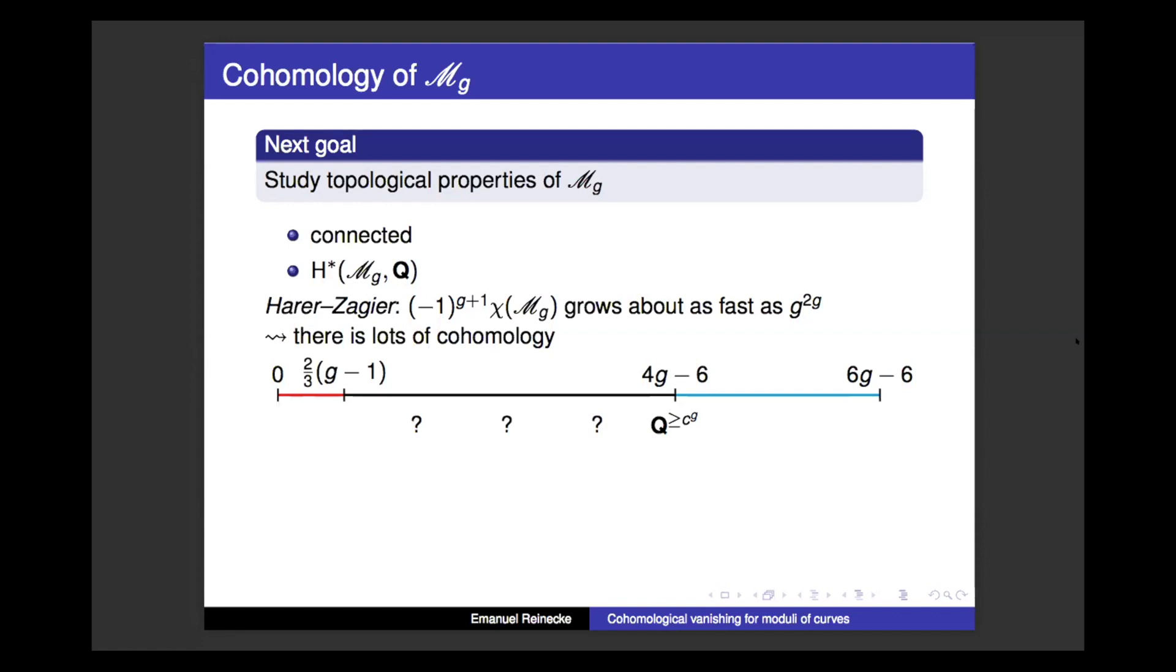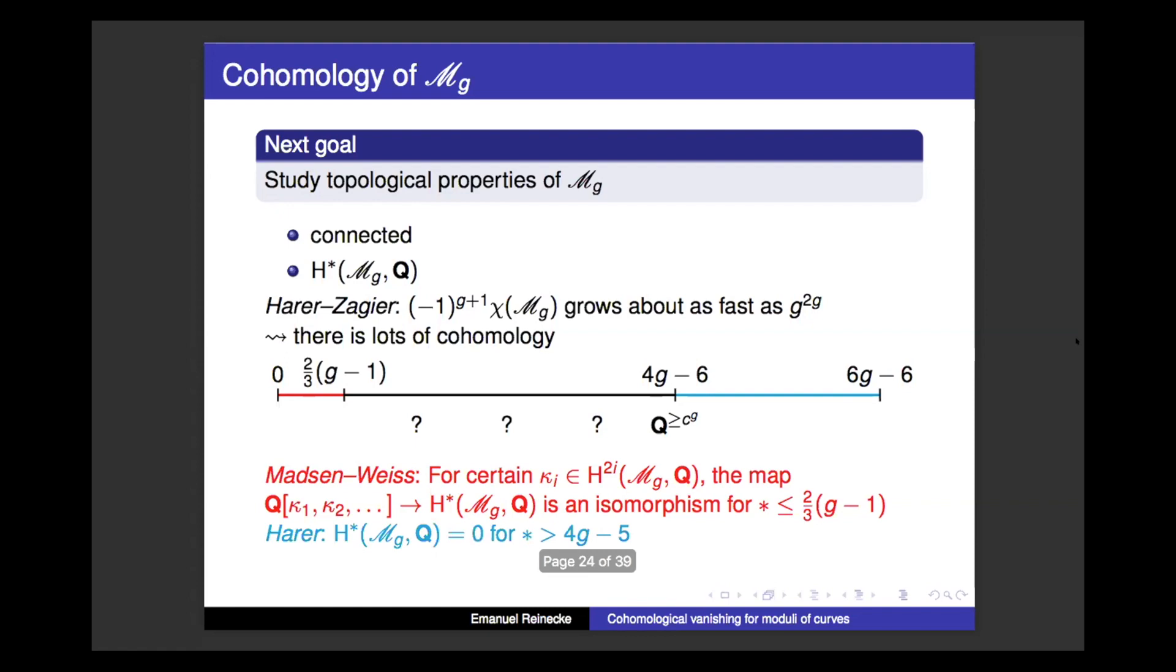So let me maybe say a little bit about the red and the blue part. In the red part, we have a famous theorem of Madsen and Weiss, and essentially it says that the cohomology in this range is given by a polynomial algebra over certain very natural cohomology classes. And then it turns out that in the blue range, the cohomology actually vanishes, which you might have expected from the fact that the dimension is 6g minus 6. That's a result of Harer. And this result is essentially optimal. So there's a recent preprint of Chang, Galatius, and Thain that says that the dimension of the cohomology in degree 4g minus 6 goes exponentially in g. One thing I want to mention about these two theorems of Madsen, Weiss, and Harer is that the proofs of both are extremely topological.